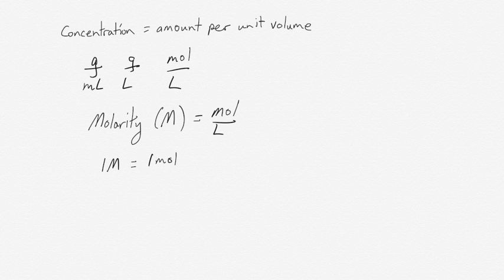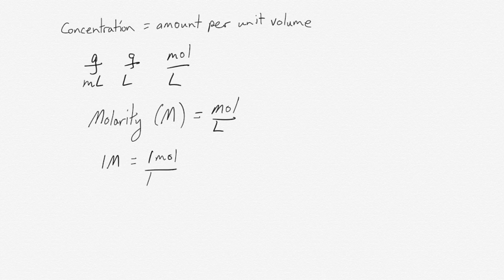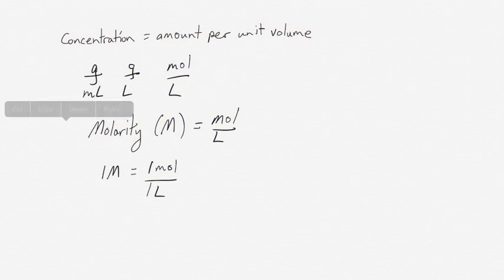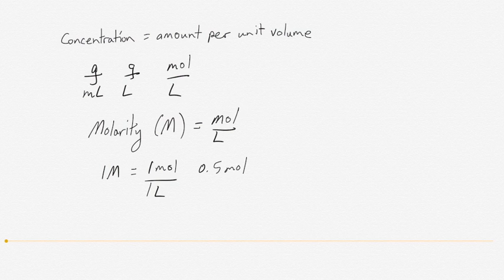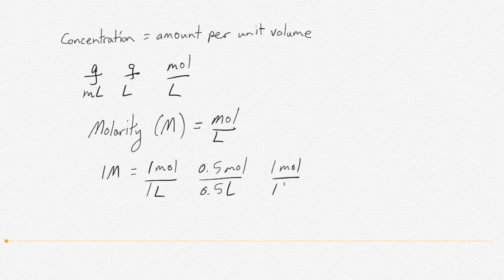So if you have something that is one molar, it has one mole of solute in one liter of solution. Or it has 0.5 moles in 0.5 liters of solution. Either way, it works out to the same ratio, where if you do the division, you end up again with one mole for every one liter.